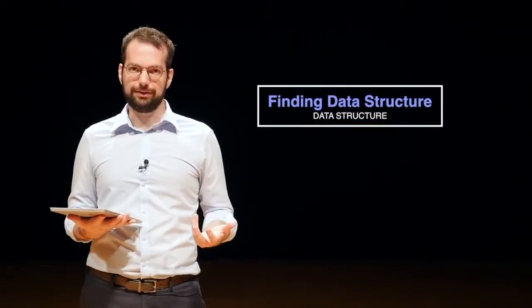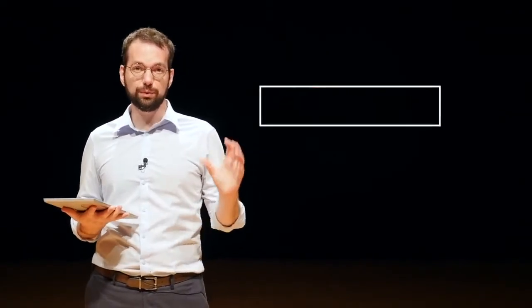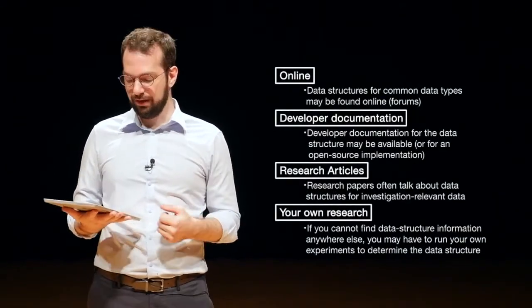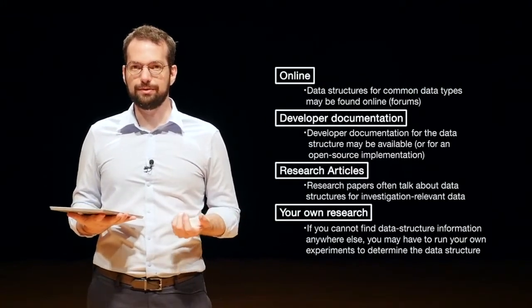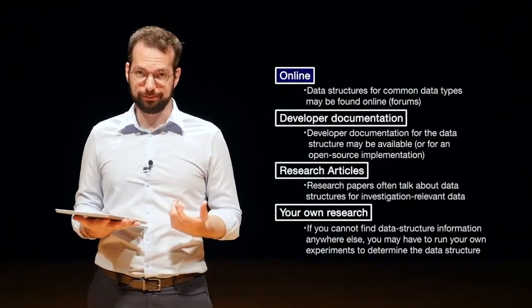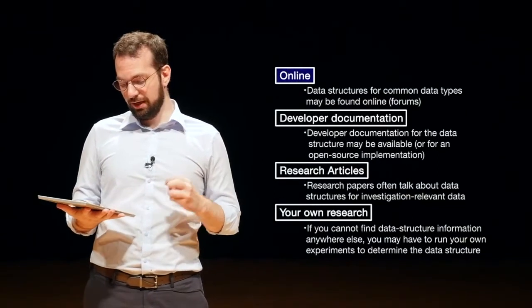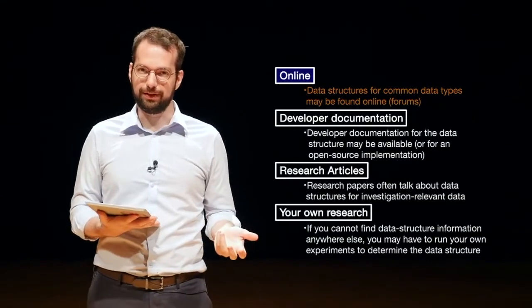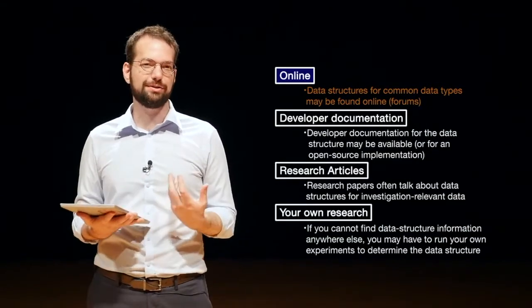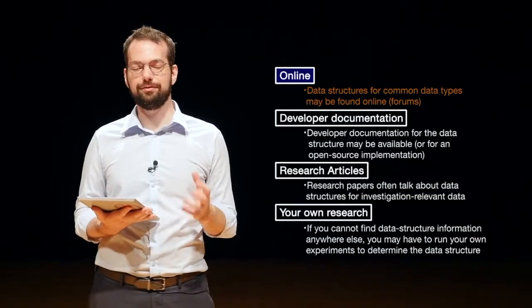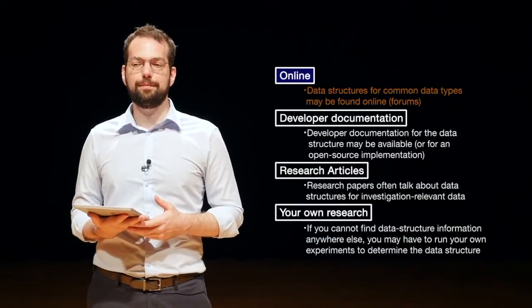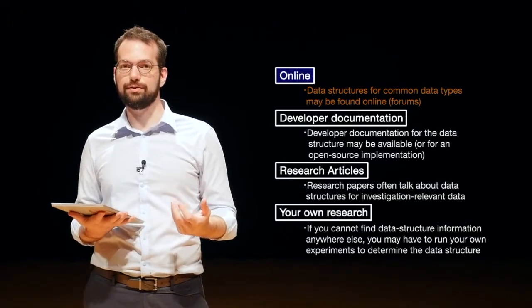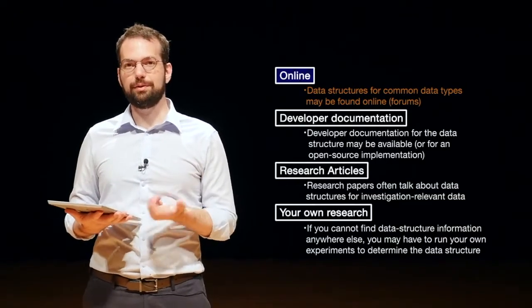So how do we actually find data structures? The data structures are essentially the rules that we use to pull out meaning from the ones and zeros or the data. Finding the data structures, there's a couple of different ways. First off is online. The first place you want to start is with an online search. Looking for the data structure for common data types may be found online in forums or other places where digital investigators are.